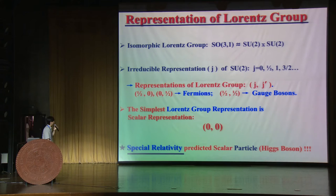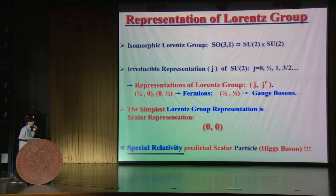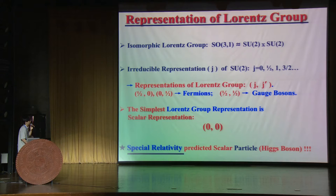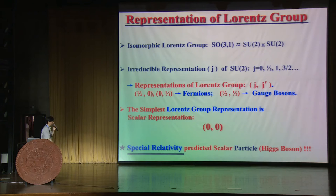This scalar representation was predicted almost 100 years ago by the Lorentz group. Finally, four years ago in 2012, we found a scalar — a leading candidate for this scalar representation. In particle physics and cosmology, we also know there are other required candidates for scalars, like the inflaton. So people speculate about whether there is an additional scalar particle, and whether there is any connection to the Higgs boson, or whether the Higgs boson itself could be the inflaton.